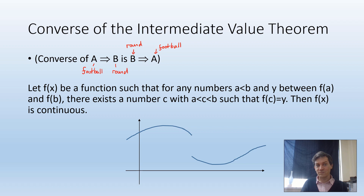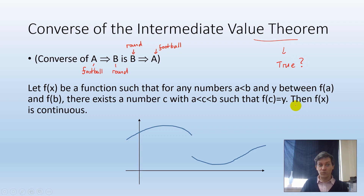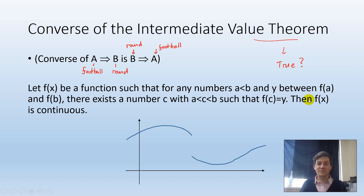Sometimes the converse can be true and sometimes it's not. The question we want to ask is: is the converse of the Intermediate Value Theorem true or not? The converse is formed by swapping the 'if' and 'then' parts. Rather than starting with f(x) being continuous, we suppose that f(x) has the property that for any numbers a < b and y between f(a) and f(b), there is a number c such that f(c) = y. Does this mean the function must be continuous?